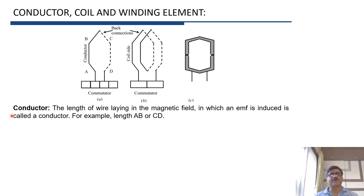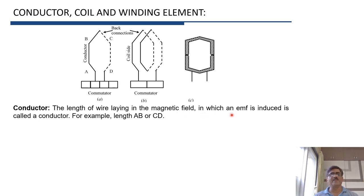The first important term related to winding is conductor. Here, AB is called one conductor, and CD is called another conductor. A conductor is the length of wire laying in the magnetic field in which an EMF is induced.